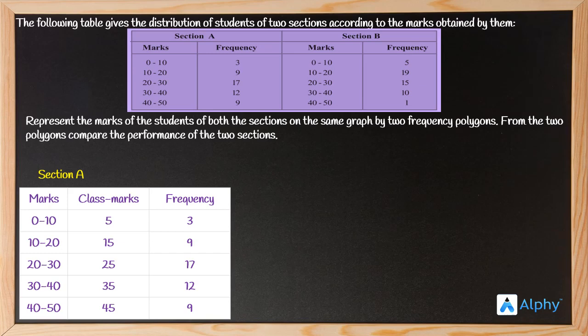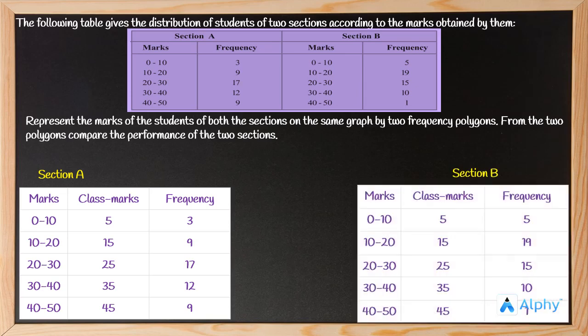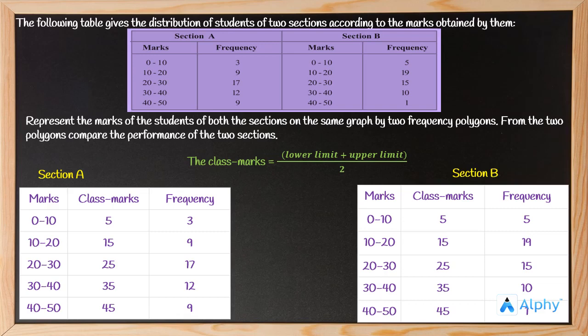For section B, we have created another table which also gives the class marks. We used the same method: class mark equals lower limit plus upper limit divided by 2. For example, for the class interval 10 to 20, the class mark is 10 plus 20 divided by 2, which equals 15. The class intervals for both sections A and B are similar, with the same class widths, so the class marks for both sections are equal for each class. The difference between the two sections is in the frequencies.